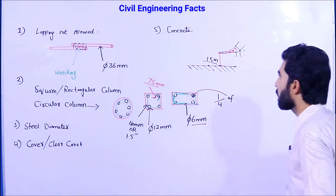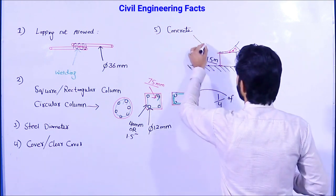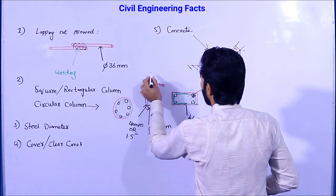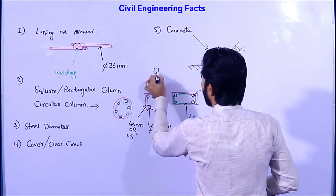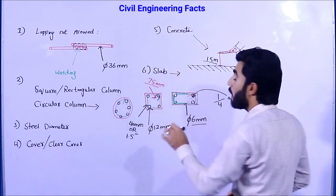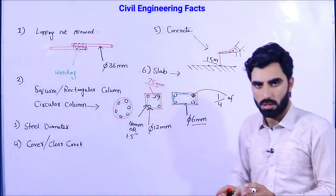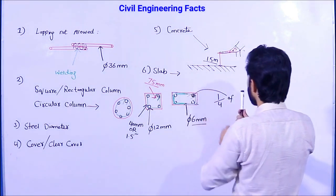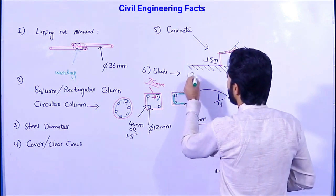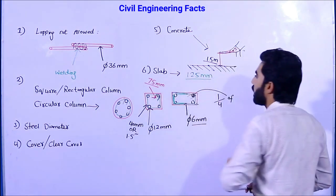For slabs, the thickness should not be less than 125 mm for lighter loads. This is the next important engineering fact — the minimum slab thickness is 125 mm.